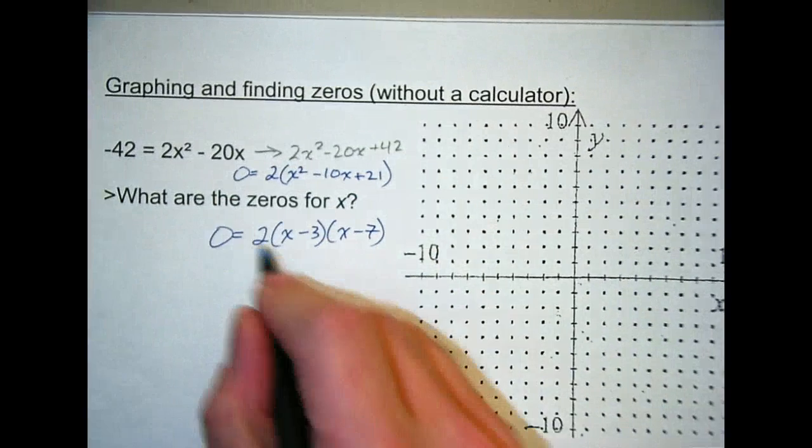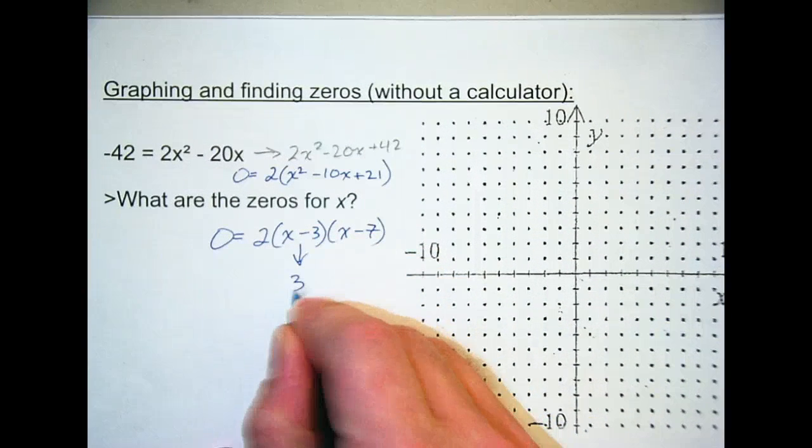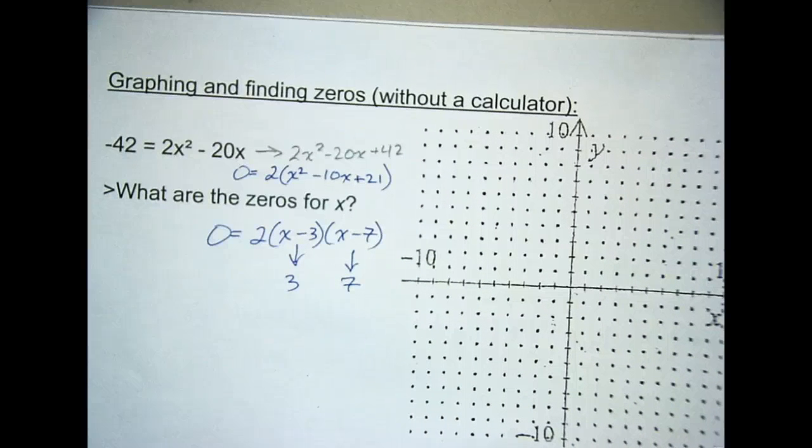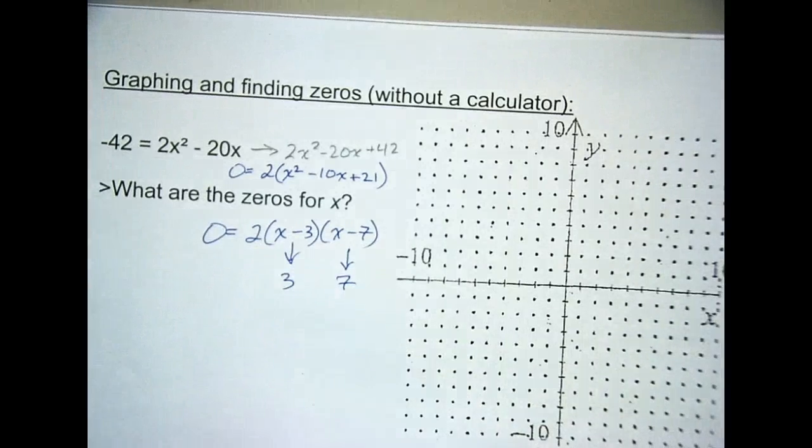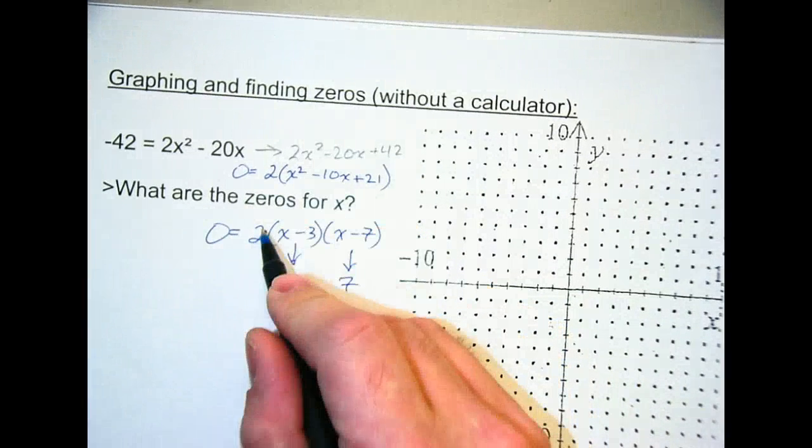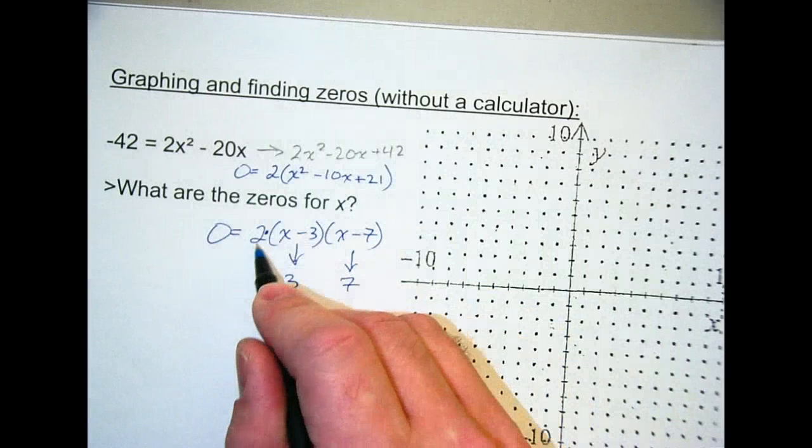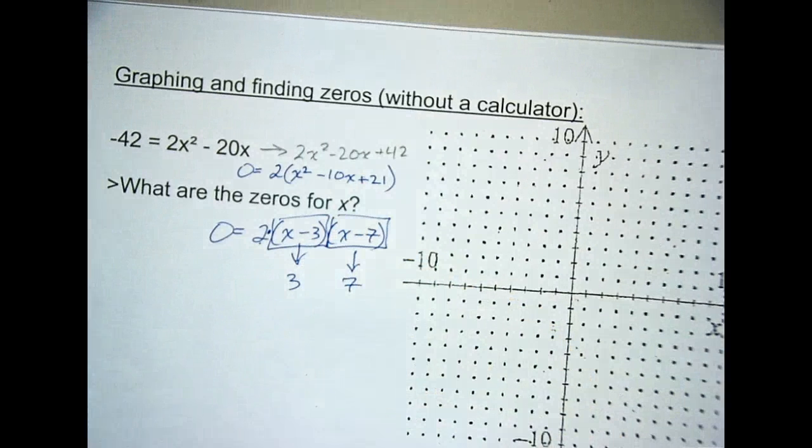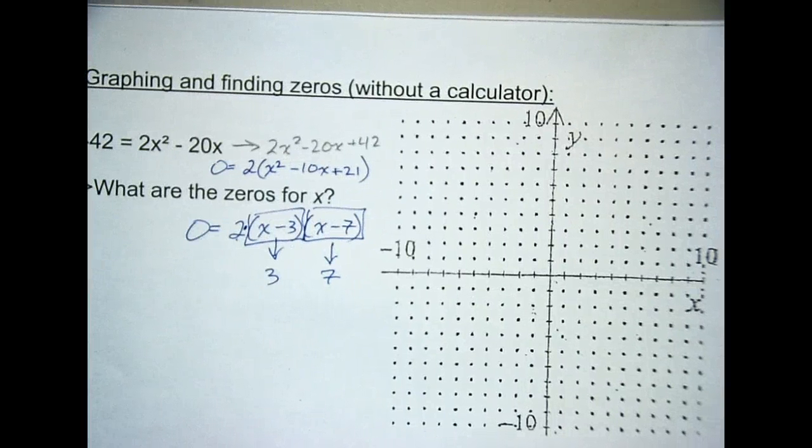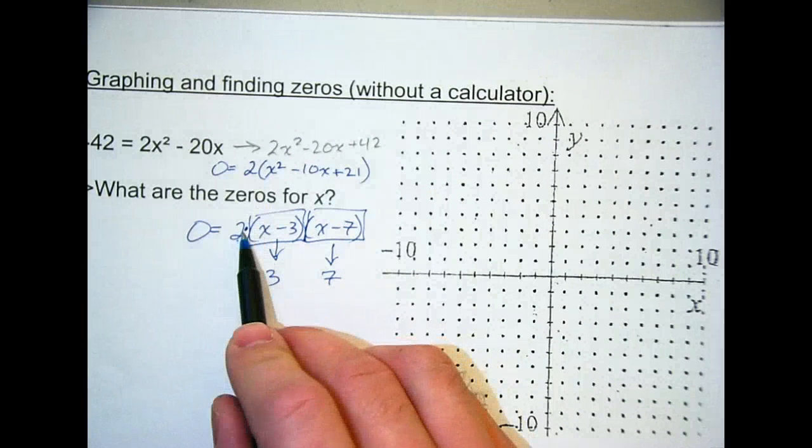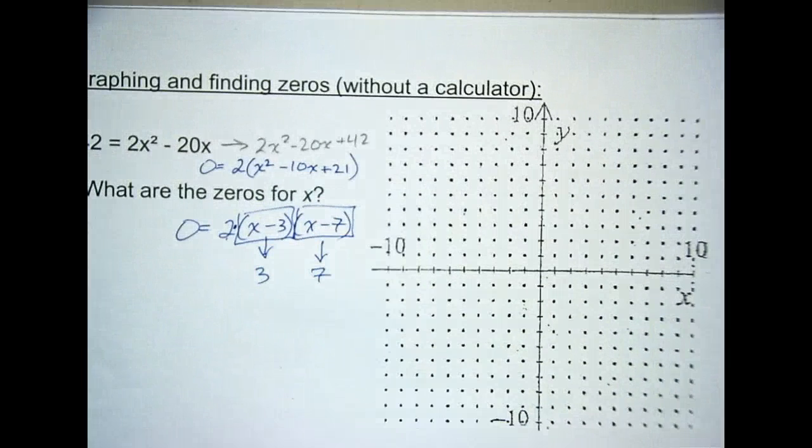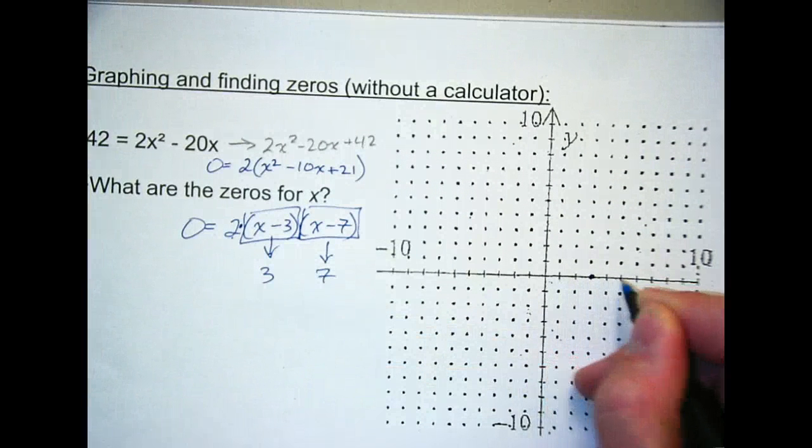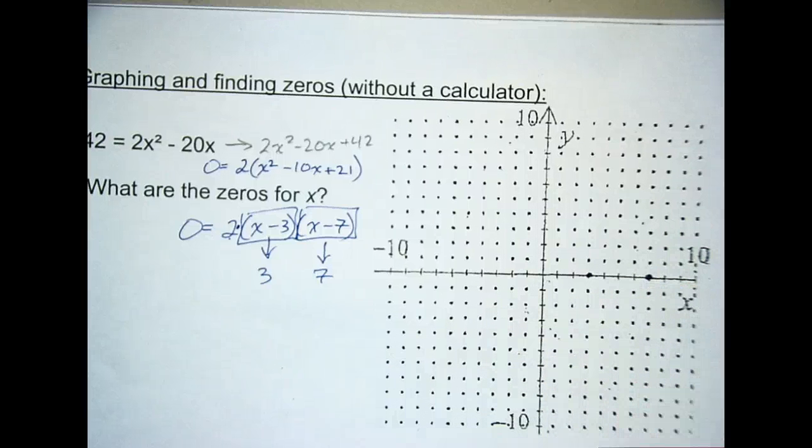And all that stuff equals 0. So what I have now are these X-intercepts of 3 and 7. That 2 out there is not going to affect an X-intercept. That's a good question. You can't make 2 equal 0. So either that has to be 0, this has to be 0, or this has to be 0. When we're going here, 1, 2, 3, right there, and 4, 5, 6, 7, right there. Those are my intercepts.